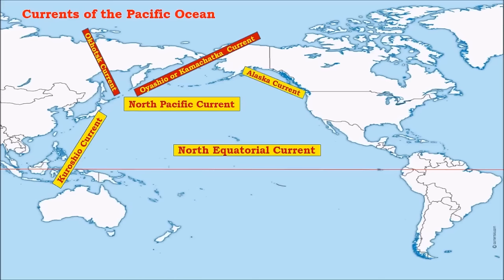The North Pacific Current splits into two branches: the Alaska Current, which is a warm current, and the California Current flowing along the coast of North America, which is a cold current. When we say a current is cold, it simply means it is comparatively colder than surrounding regions; similarly, Alaska Current is warmer relative to its surroundings. The California Current completes the cycle by converging with the North Equatorial Current.